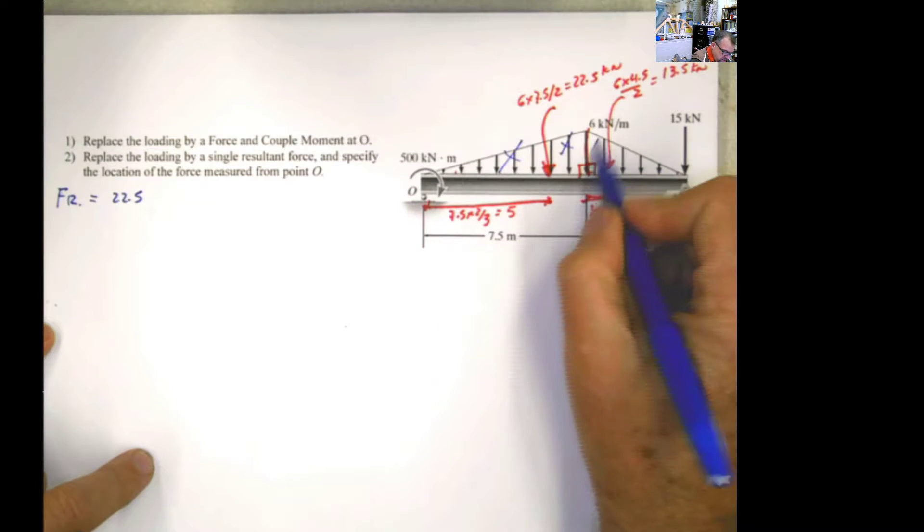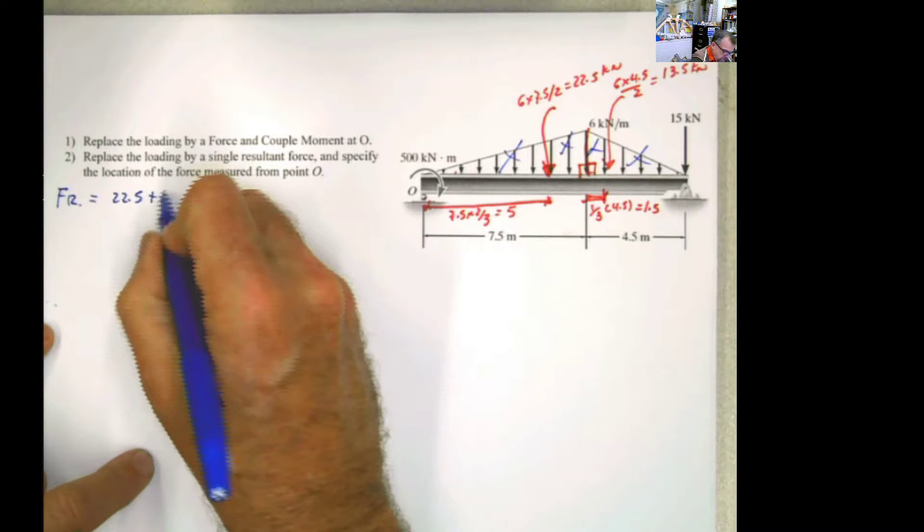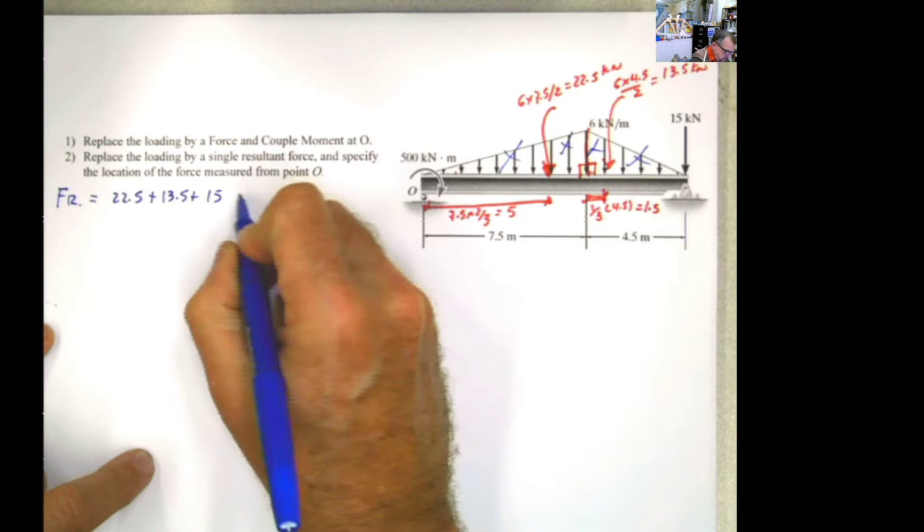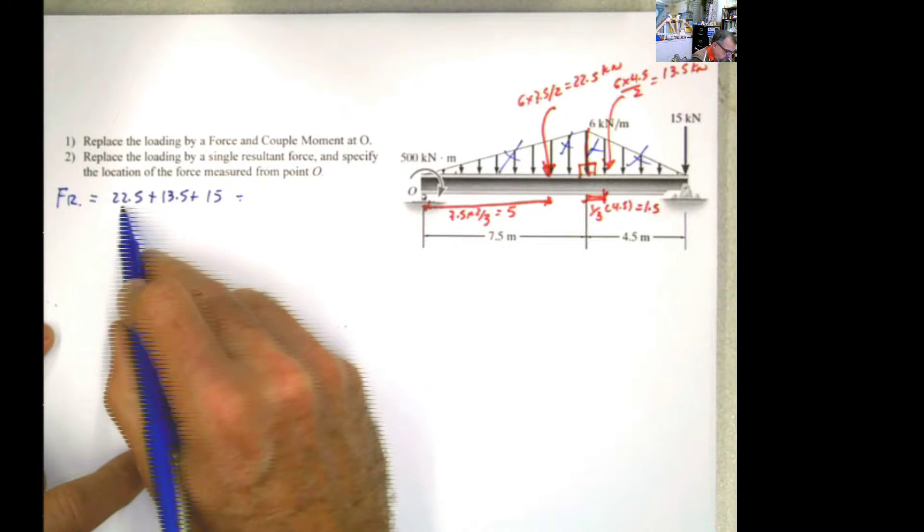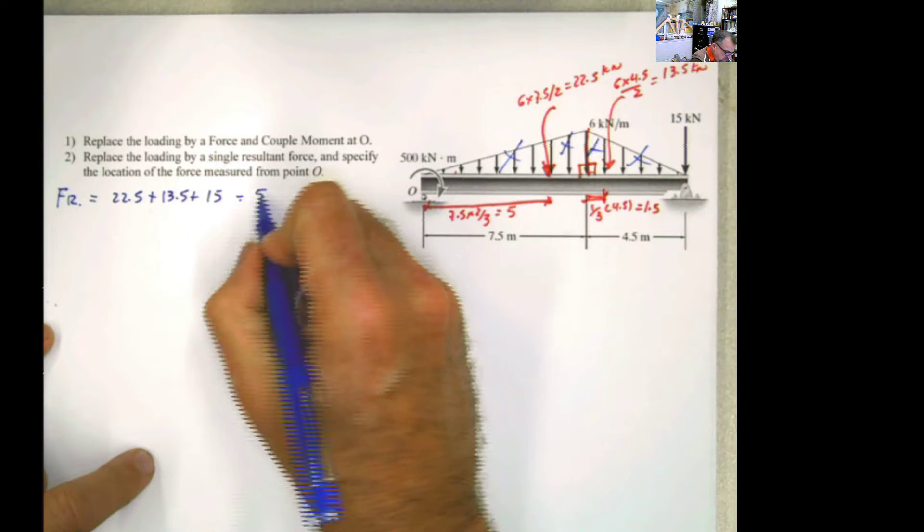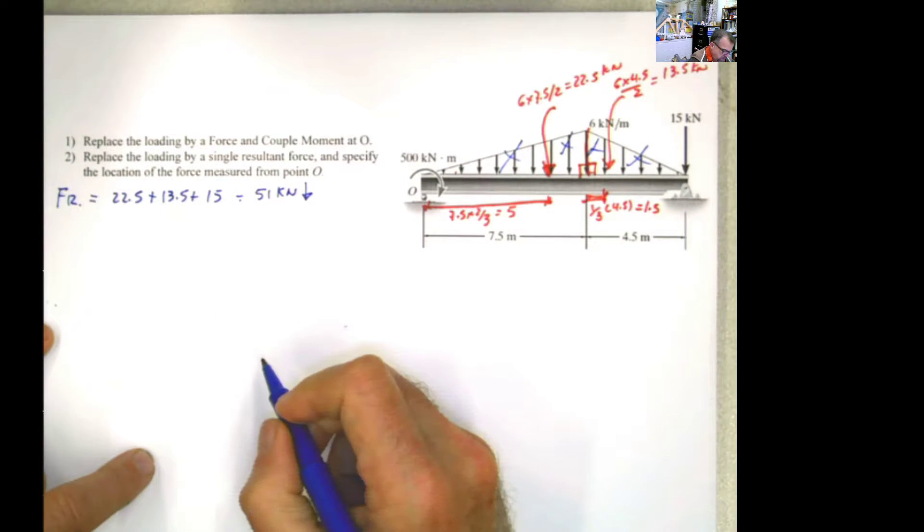So the resultant force is going to be 22.5 plus 13.5 plus 15. And that is 36 plus 15 is 51 kilonewtons acting in this direction.